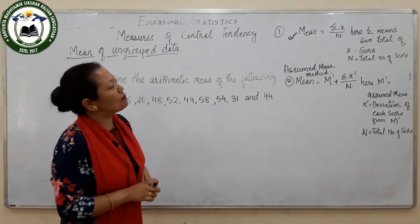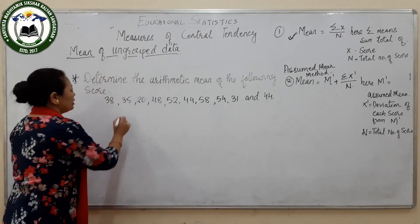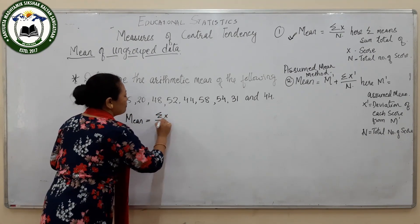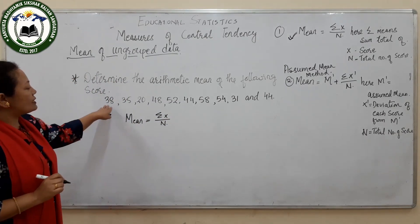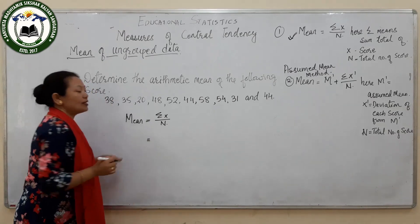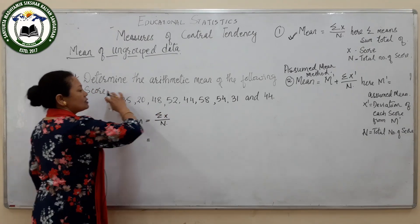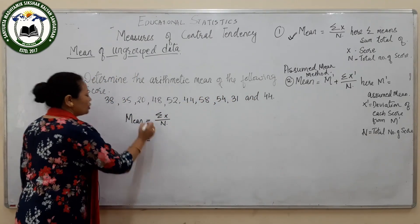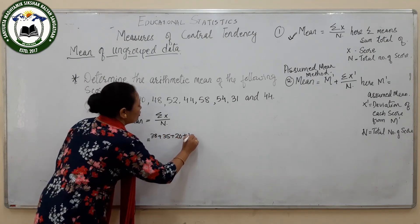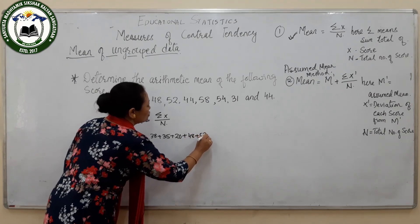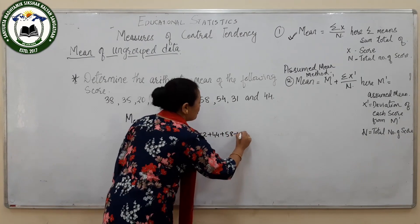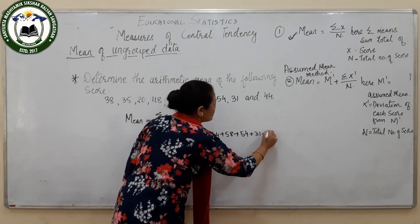We will first apply the simple formula: mean equals sigma x by N. These numbers are not arranged in proper order — there is no need to arrange them. Sigma x means the sum of all those numbers. So we write: 38 + 35 + 20 + 48 + 52 + 44 + 58 + 54 + 31 + 44.